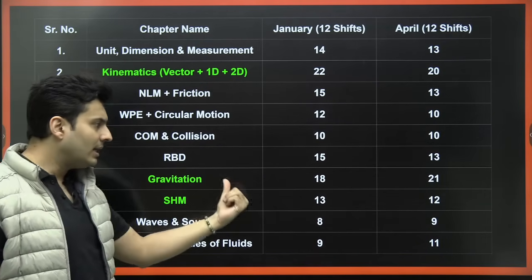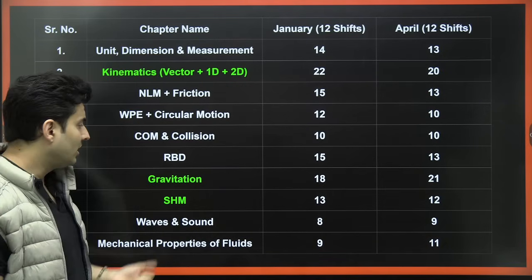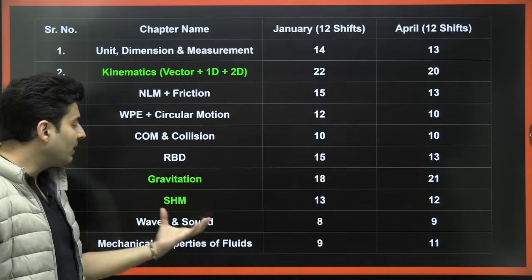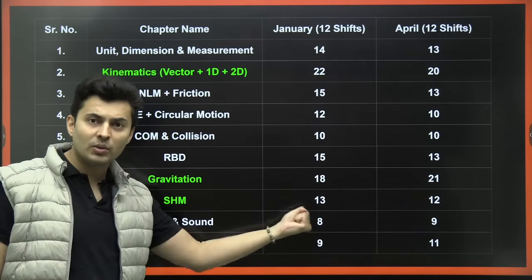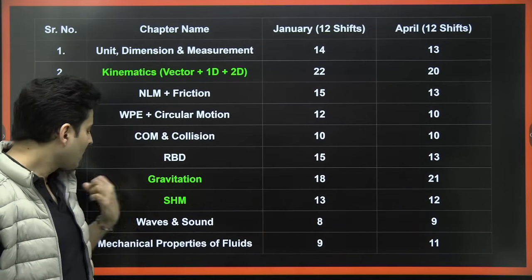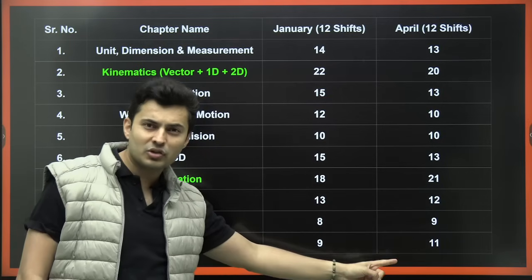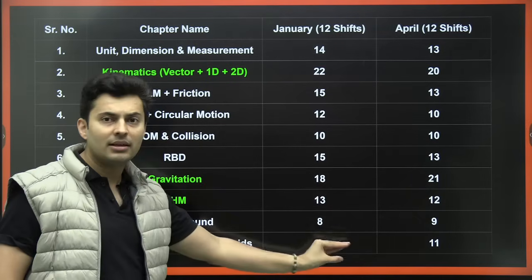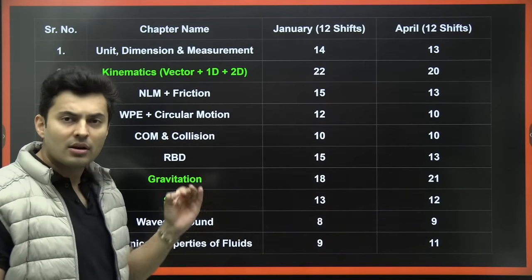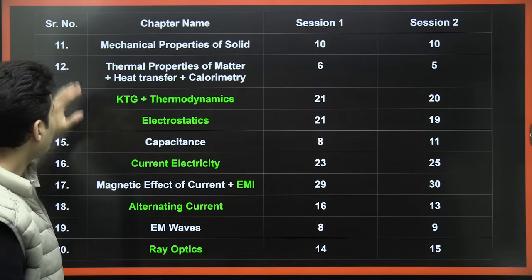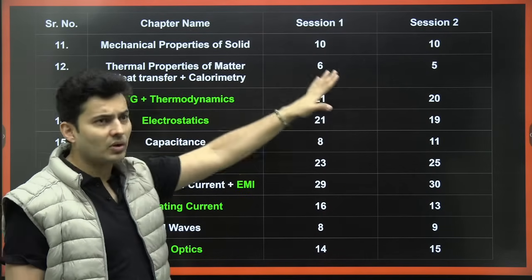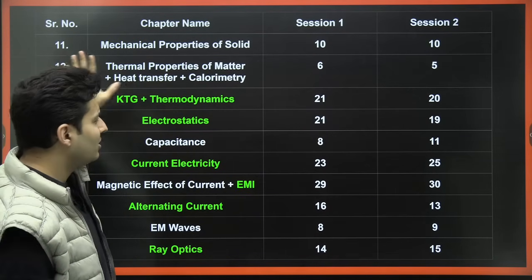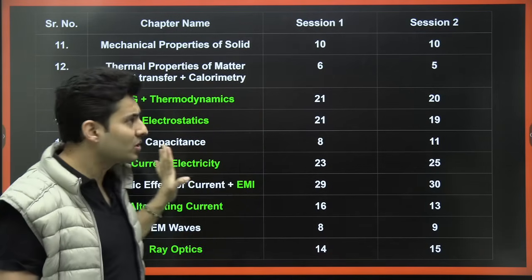Gravitation is on the slightly higher side — 18 to 21 questions across shifts. SHM has 12 to 13 questions, and if you couple it with waves and sound it becomes a big and very important unit. Mechanical properties of fluids is not so important and very time-consuming, so you might decide to skip it if you're not aiming for 99.9 percentile. Mechanical properties of solids is medium weightage — maximum one question expected.